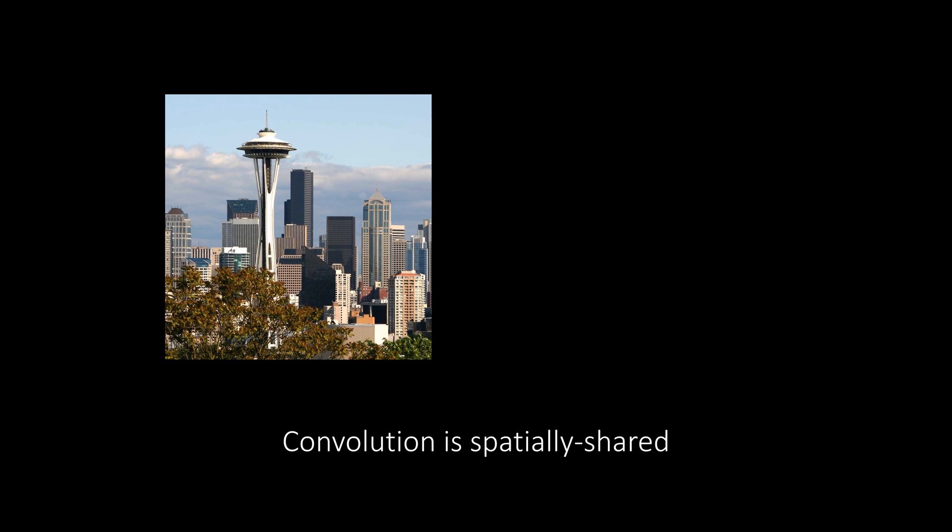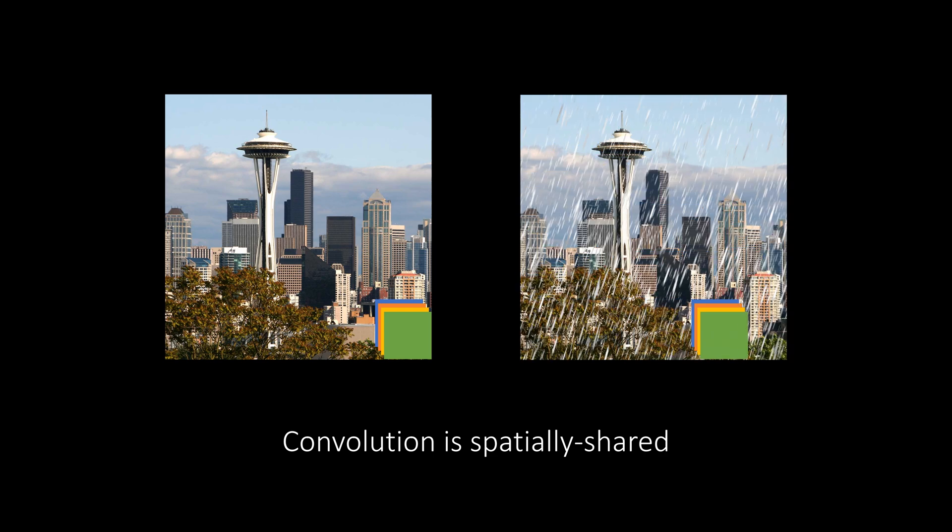Consider the convolution operation on this image. The same set of filters are applied everywhere in a sliding window fashion. Moreover, once learned, the same set of filters are applied on all different images, even if the images depict very different types of scenes. In other words, convolution is content agnostic.